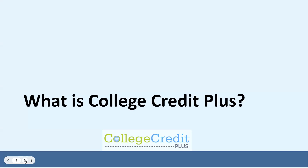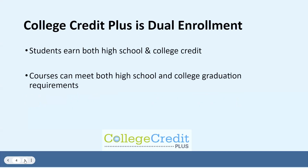What is College Credit Plus? College Credit Plus is the state of Ohio's dual enrollment program. Students are enrolled in college classes and receive both high school and college credit for these classes. That means that the student can be earning credit for both high school graduation and to meet college degree requirements, so it's pretty cool.